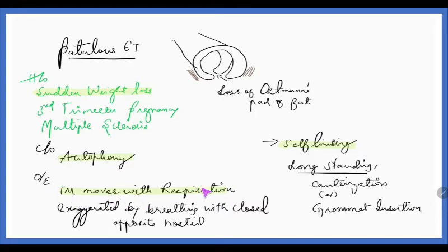On examination, we can see tympanic membrane moving with the respiration. And this is exaggerated when one nostril is closed. So if the right side is affected, the left side nostril is closed, then this movement is exaggerated. Because the pressure wave entering this Eustachian tube reaches the tympanic membrane and always vibrates the tympanic membrane in and out on respiration. This is what is happening in patulous Eustachian tube.